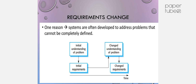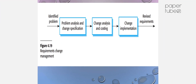Systems are often developed to address problems that cannot be completely defined. We will have an initial understanding of the problem and will control the initial requirements. That is why we analyze changes in the process of changing requirements, and time-to-time changes occur in change management.